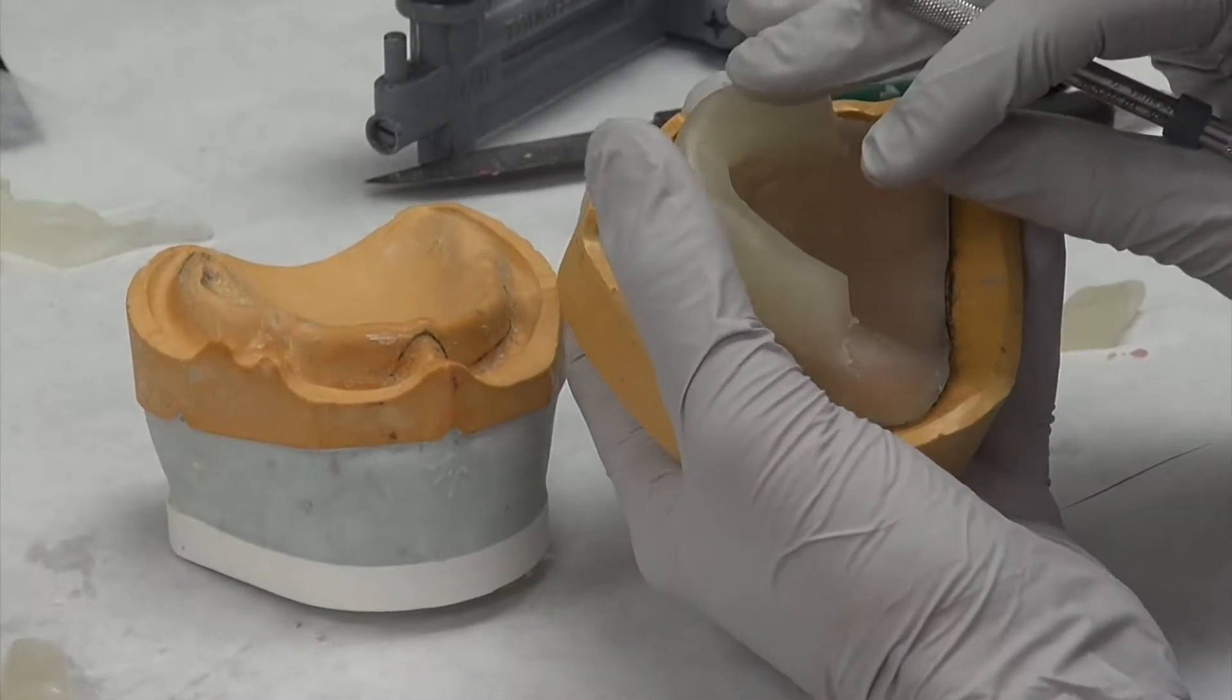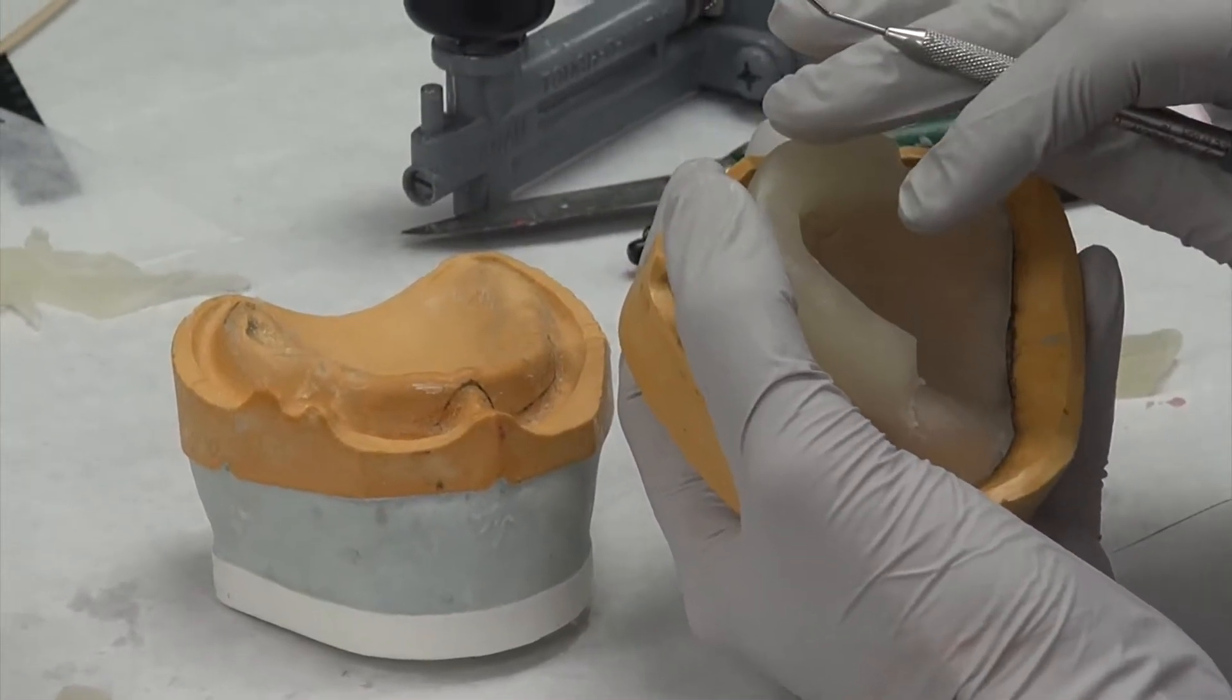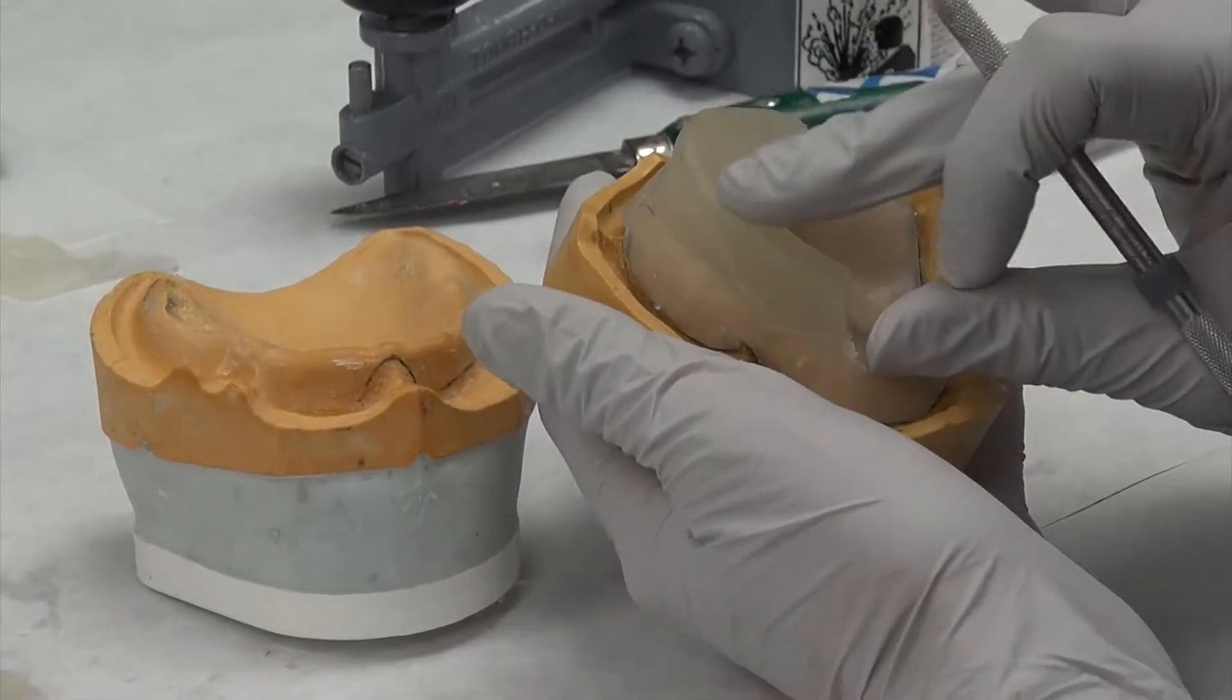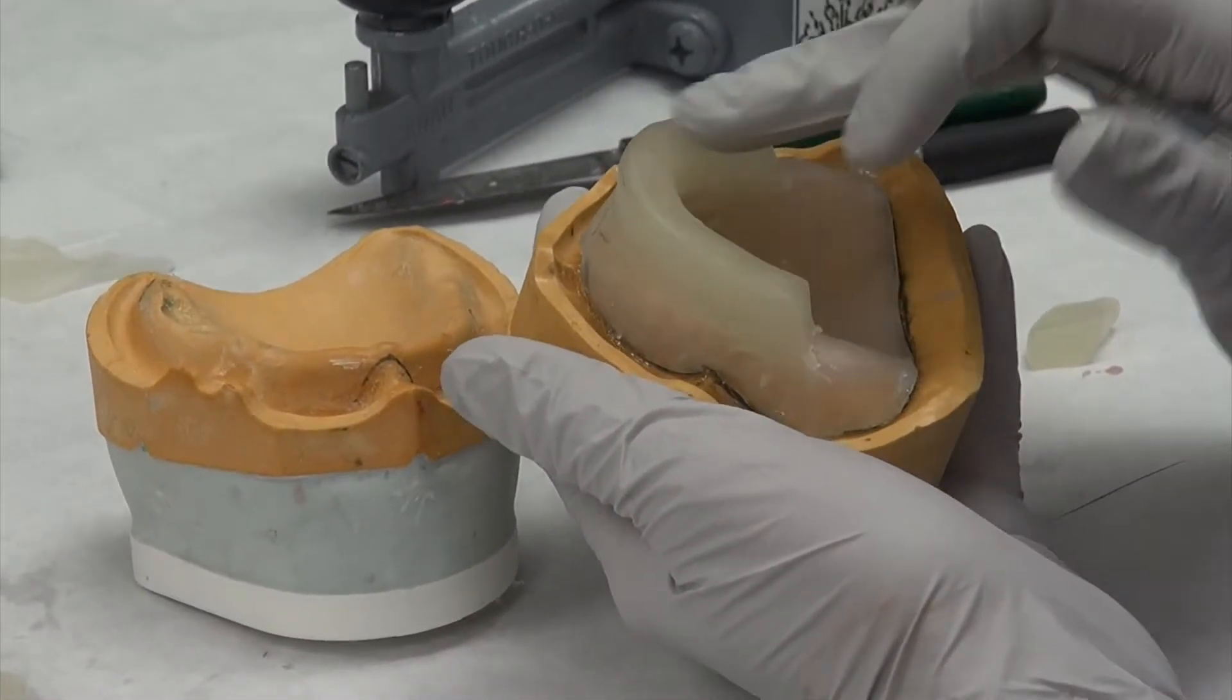Essentially the handle is kind of simulating where the teeth will be. When you do the record bases, eventually you'll add wax to simulate where the handle is. So see how they're all kind of building on each other.